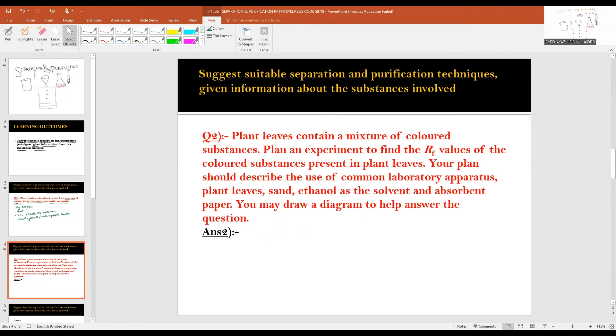Our next question is about chromatography. Plant leaves contain a mixture of colored substances. Plan an experiment to find the Rf values of the colored substances present in plant leaves. Your plan should describe the use of common laboratory apparatus, plant leaves, sand, ethanol as a solvent, and absorbent paper. You may draw a diagram to help answer the question. You can write any six from...